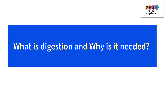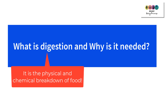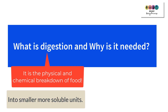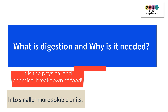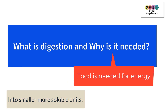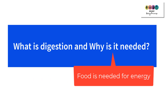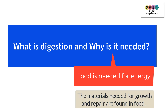What is digestion and why is it needed? Digestion is the physical and chemical breakdown of food. Food is made up of biomolecules — carbohydrates, proteins, and lipids — and we need to break down those large molecules into smaller, more soluble subunits that are small enough to pass into the blood and into cells. Food is needed for energy — glucose is needed for respiration in the mitochondria — and also as a source of raw materials for growth, repair, and building new chemicals.